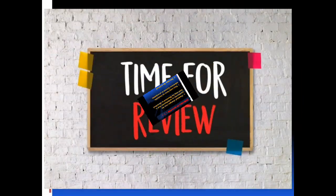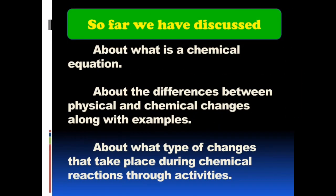It's time for review. So far, we have discussed what is a chemical equation, the differences between physical and chemical changes along with examples, and what type of changes take place during chemical reactions through the activities.